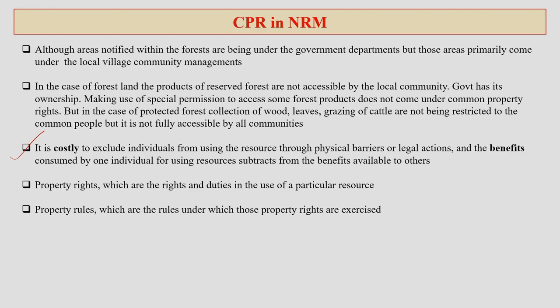Property rights are the rights and duties in case of utilizing a particular resource. In the example of the pond, me and my neighbours can use it for appropriate purposes. Property rules are the rules under which those property rights are exercised — you cannot just claim your right on natural resources available within your village without clarity about access to that particular resource.